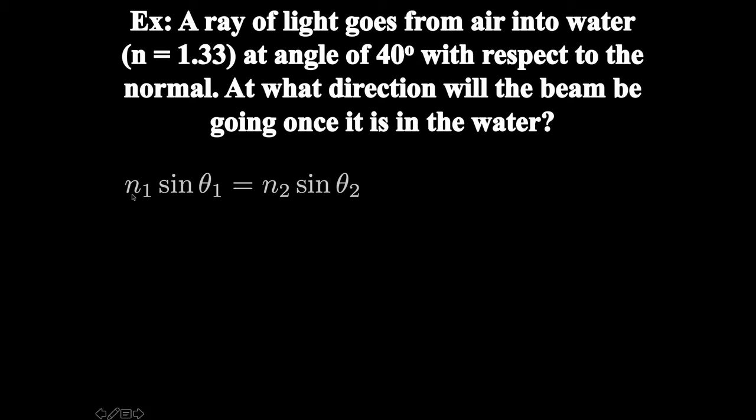The index of refraction of one medium times the sine of the angle with respect to the normal while it's in that medium is going to be equal to the index of refraction of the second medium times the sine of the angle between the normal and the ray in that second medium. Let's say that our first medium is air, so the index of refraction of air is 1, the angle of incidence is 40, second medium is water, index of refraction of water is 1.33, and the angle of refraction is unknown.